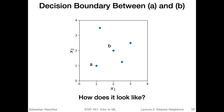Here I'm showing you a dataset consisting of two features, x1 and x2. The reason why we use a two-dimensional dataset here for illustration purposes is that humans can't visualize datasets in more than three dimensions, usually. So it is just easier to work with such a simple toy dataset where we can visualize and draw certain things.